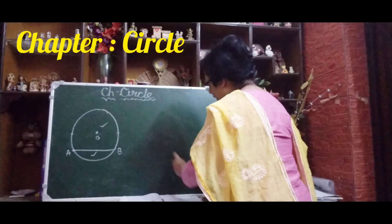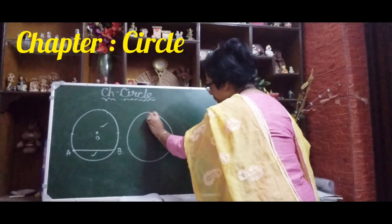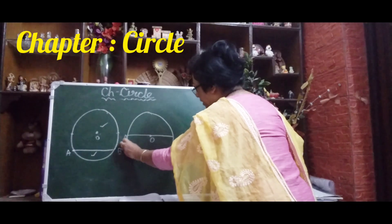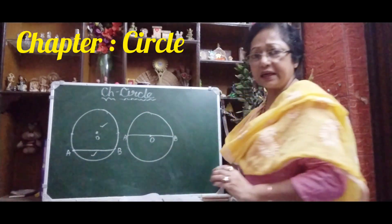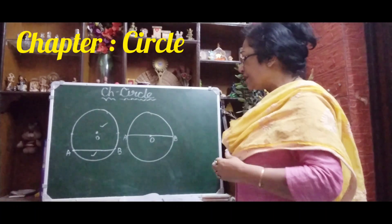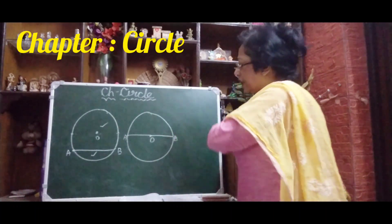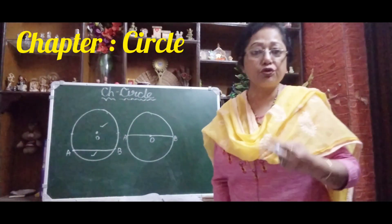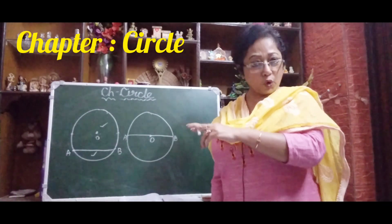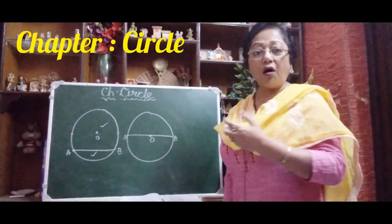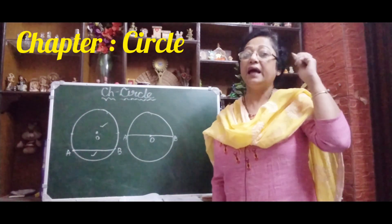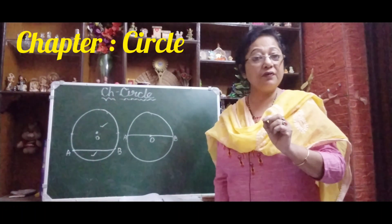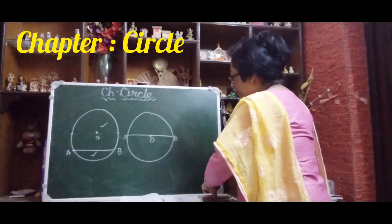Now, AB is the diameter of the circle with center O. This diameter is also dividing the circular region into two parts. Here you have seen that a chord divides the circular region into two parts called segments. Here the diameter also divides the circular region into two parts, but each part is called a semicircle.